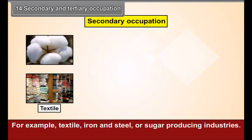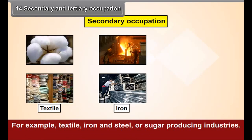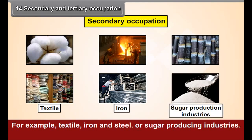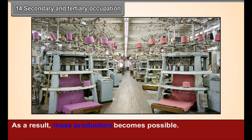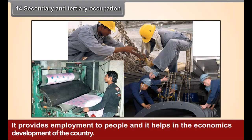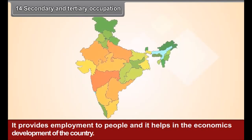For example, textile, iron and steel, or sugar producing industries. Machines are used in these occupations on a large scale in order to obtain maximum production in less time. As a result, mass production becomes possible. It provides employment to people and helps in the economic development of the country.